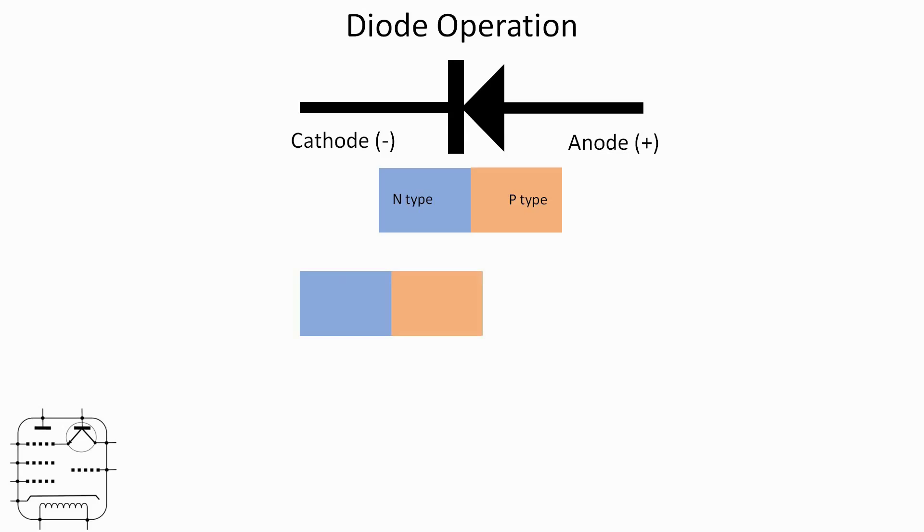When the diode is reverse biased, in other words it stops conducting, that's because there's a depletion layer created between the N and P-type and that depletion layer is exactly what it says on the tin, it's depleted of charge carriers and effectively it becomes, as far as DC is concerned, open circuit.